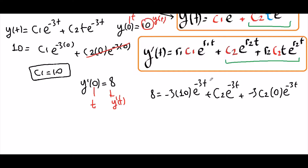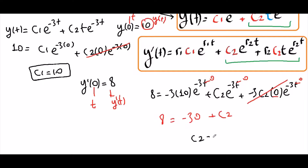At t = 0, the term with t cancels since 0 times anything is 0. e^0 = 1, so c2 remains, and 1 times -30 gives -30. If you solve for c2 by adding 30 to both sides, you obtain c2 = 38.